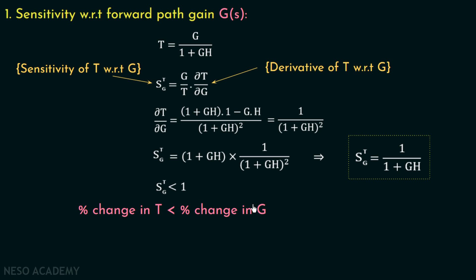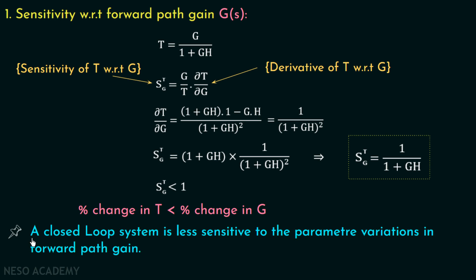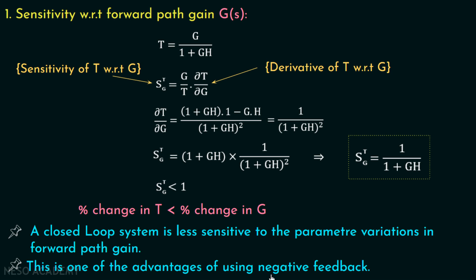So if there is a disturbance in forward path gain, it will not affect the overall transfer function. That's why we can say a closed loop system is less sensitive to parameter variations in forward path gain, and this is one of the advantages of using negative feedback. The sensitivity with respect to forward path gain G is 1 over 1 plus GH.